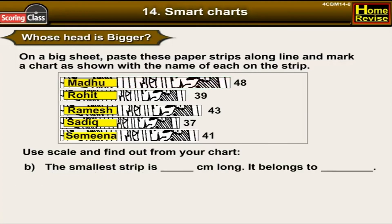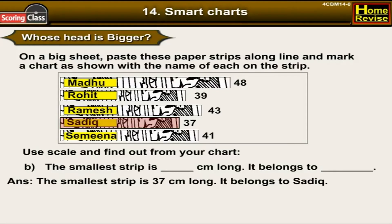The smallest strip is 37 centimeters long and it belongs to Sadi.